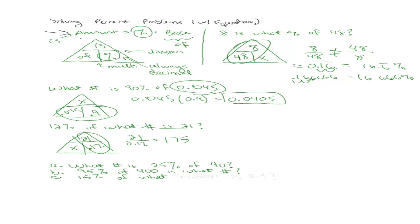It makes some sense to estimate this as we're doing it or before we do it. I have some for you to try out. What number is 25% of 90? 95% of 400 is what number? And 15% of what number is 2.4? Try those, and then if three people want to come up and do them, I'll give them the extra point for today.